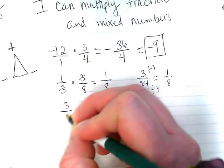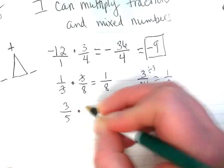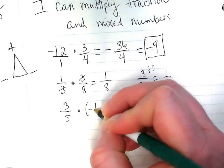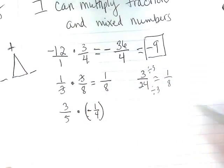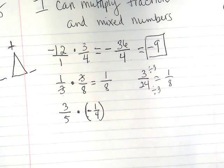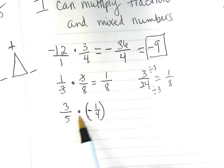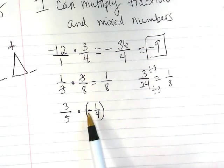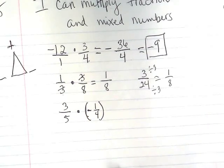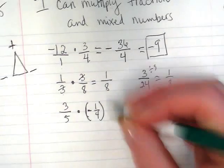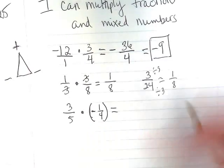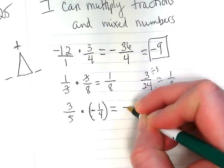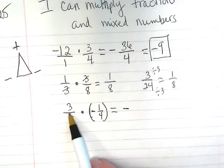How about 3 fifths times a negative 1 fourth? Remember, we often use parentheses when there's a negative number following another operation symbol. We just don't want to lose that that's a negative number. So I'm back to thinking about a positive number times a negative number gives me a negative answer, right?